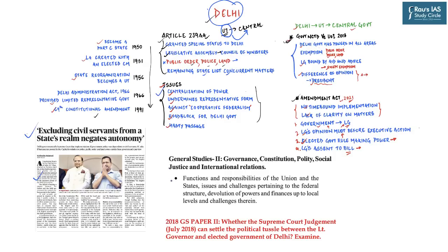This is relevant to the 2018 Mains GS Paper 2 question: 'Whether the Supreme Court judgment of July 2018 can settle the political tussle between the Lieutenant Governor and the elected government of Delhi.' Under the GS Paper 2 syllabus, functions and responsibilities of the Union and states, issues and challenges pertaining to the federal structure, and devolution of power and finances are covered — and the power distribution between the Centre and Delhi's government is directly relevant.